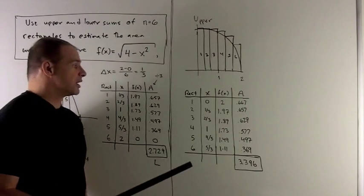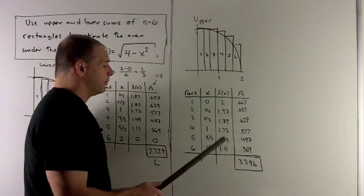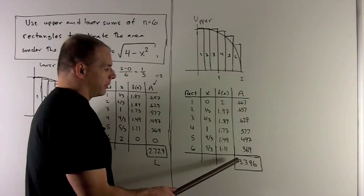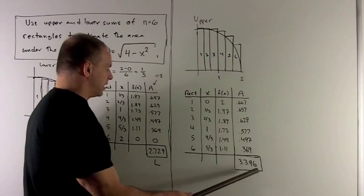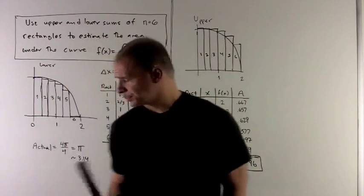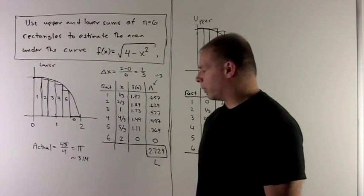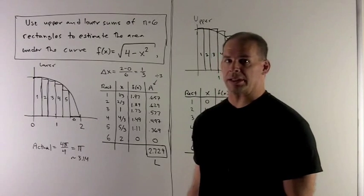I get all my areas, we add them up, and I get 3.396, and we notice that's a little bit more than 3.14, which is what we would expect.